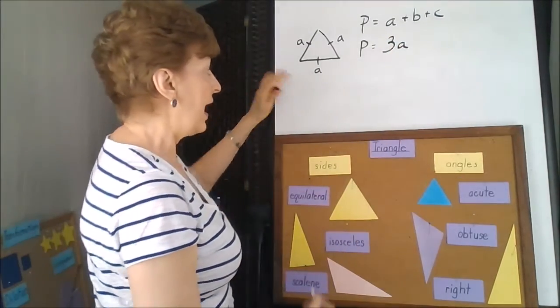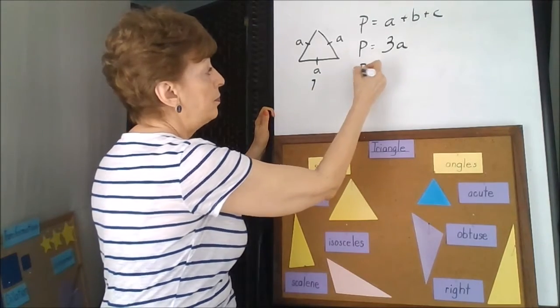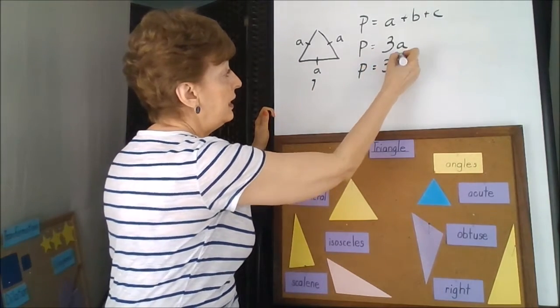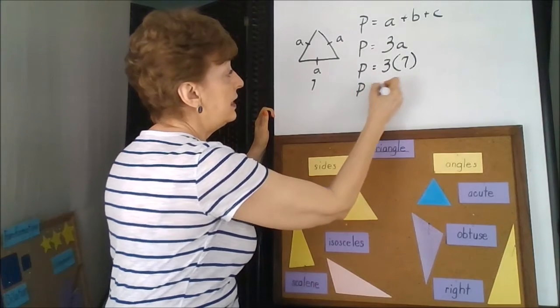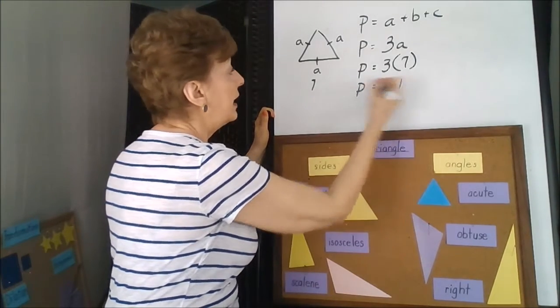So if A was 7, we would have perimeter is equal to 3 times 7. Perimeter is equal to 21 units.